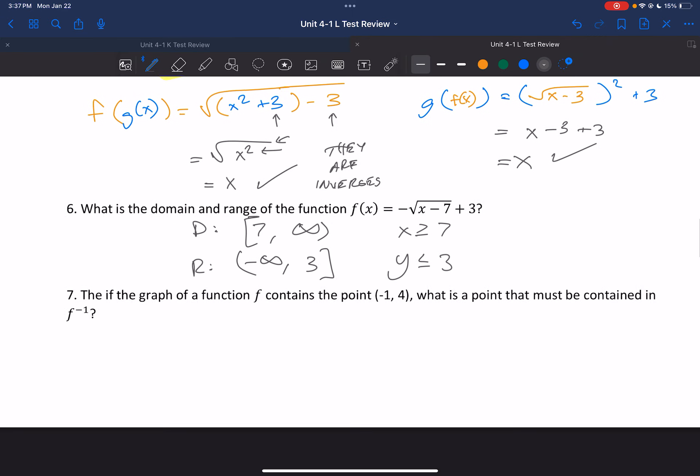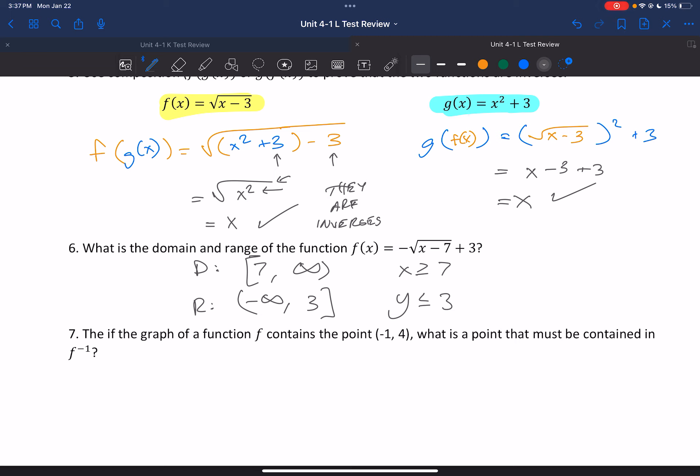Okay, number 7. If we have the point negative 1, 4, what's the inverse? Well, 4, negative 1. Swap the x and the y. That's it.